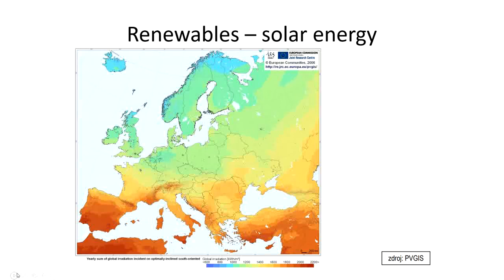When we talk about solar energy, we have an illustrative map of the solar energy yearly potential, showing the annual global irradiation in units of kilowatt hours per square meter. The highest values of solar irradiation are in the southern parts - northern Africa, the Near East, and south of Spain and Italy - where values are more than two megawatt hours per square meter per year. In central Europe, around Czechia, the values are a little above 1000 kilowatt hours per square meter, which is about half of the southern regions.